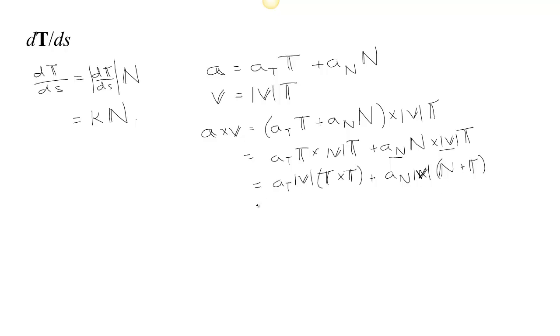We're getting somewhere now. T cross T, because those two vectors are pointing in the same direction, their cross product is zero. The parallelogram that they create has no area, so the length of the result is zero. So this cross product is zero, so that part disappears.